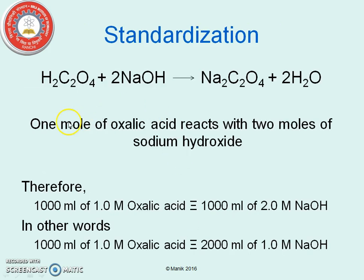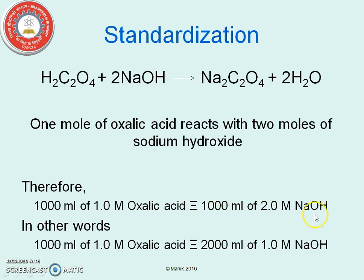Standardization — molar approach. The reaction shows that 1 mol of oxalic acid reacts with 2 mol of sodium hydroxide to give 1 mol of sodium oxalate and 2 mol of water. Therefore, 1000 ml of 0.1 molar oxalic acid is equivalent to 1000 ml of 0.2 molar NaOH solution. In other words, 1000 ml of 1 molar oxalic acid is equivalent to 2000 ml of 1 molar NaOH.